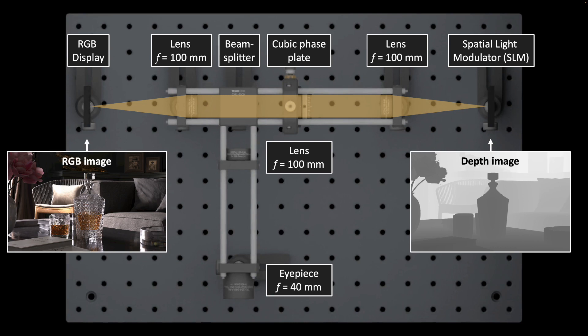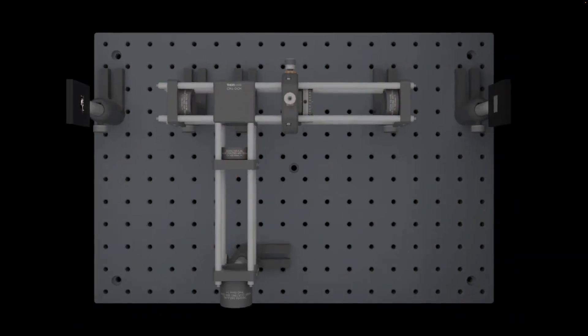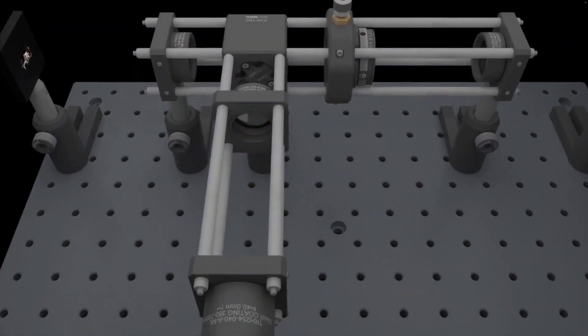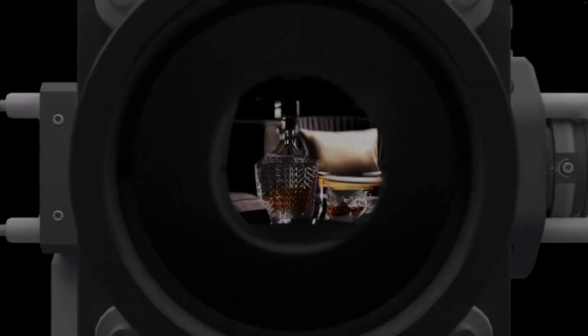The SLM reflects the light back at angles that depend on the given depth image, and this light passes through the cubic faceplate a second time. A beam splitter relays this image towards an eyepiece. When looking through the eyepiece, we are then immersed into a virtual world that supports focal blur.